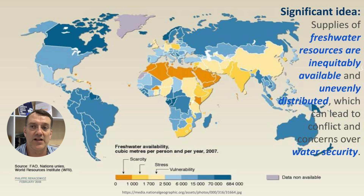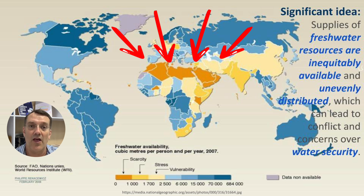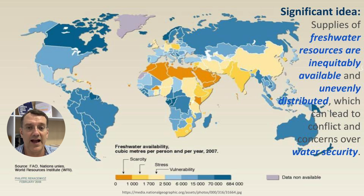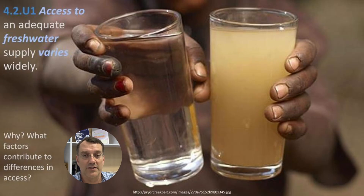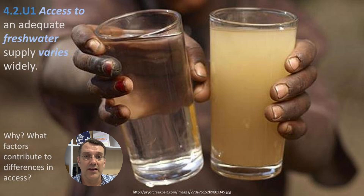Looking at this map, it's pretty clear that in North Africa and the Middle East there are lots of deserts and very scarce water supplies — that's a natural contribution to different levels of access to fresh water. The first knowledge statement is that access to fresh water supply varies widely. Although absolute quantities of fresh water on Earth are pretty much always the same, the way it's distributed around the planet is a combination of both natural and human factors.